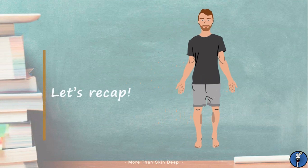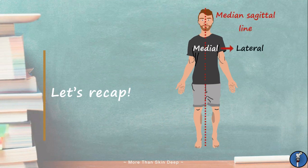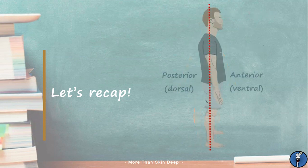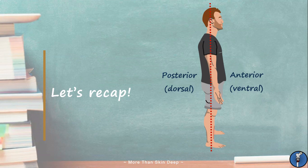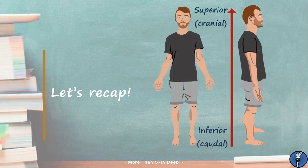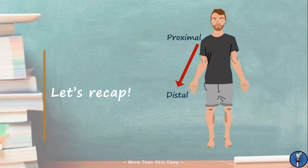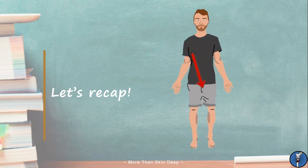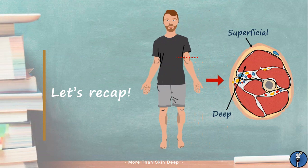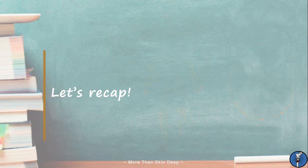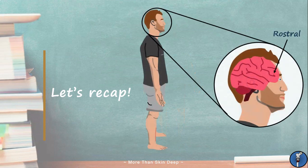Now we've covered all of the location terminology, let's have a quick recap. A medial structure is one that's closer to the midline of the body, and a lateral structure is one that's further away. An anterior structure is towards the front of the body, and a posterior structure is towards the back. Superior structures are higher up, and inferior structures are lower down. Proximal structures are closer to the origin of something, and distal structures are further away. Superficial things are closer to the body surface, and deep things are closer to its interior. Finally, rostral structures are closer to the nose.